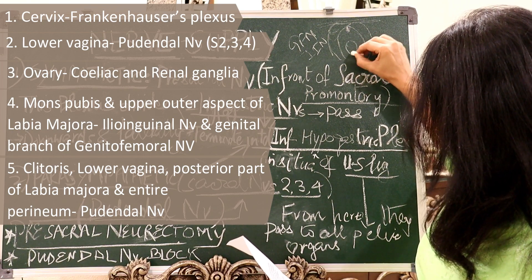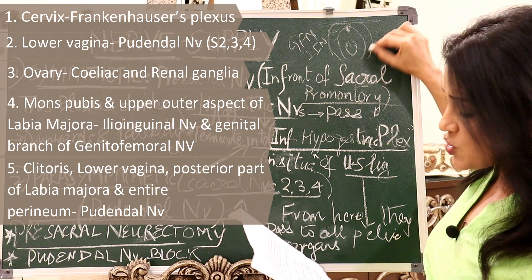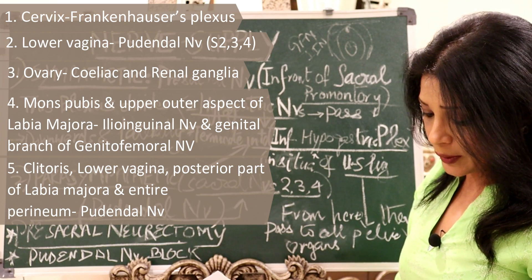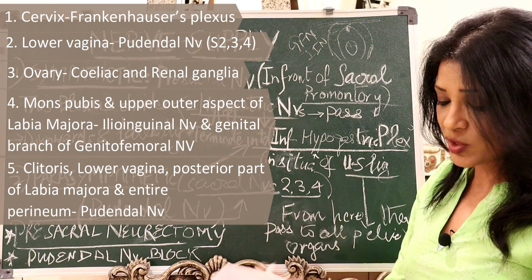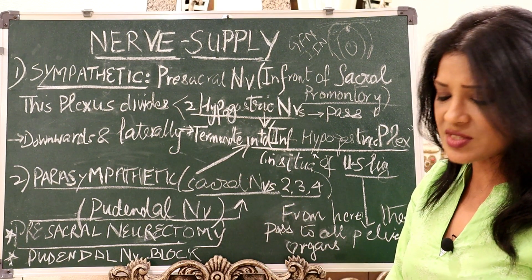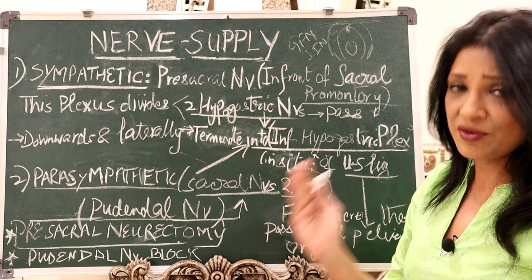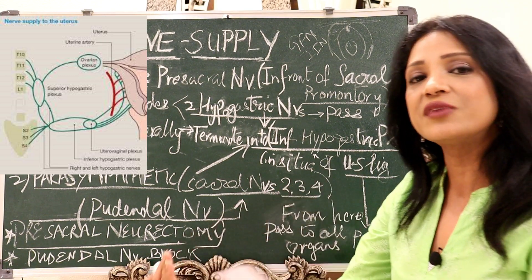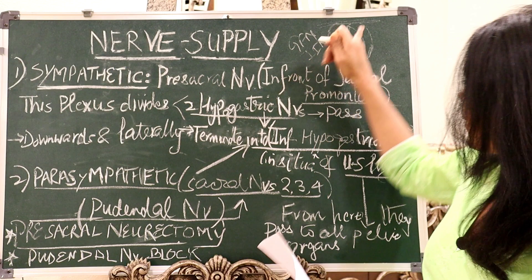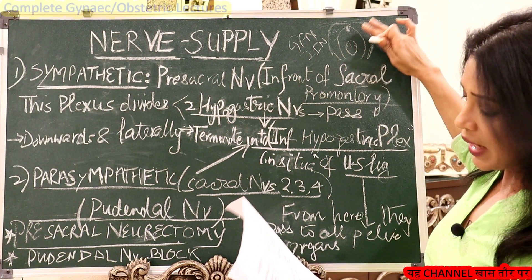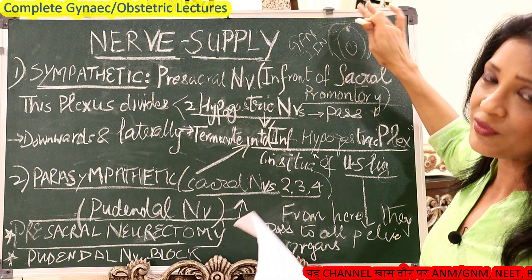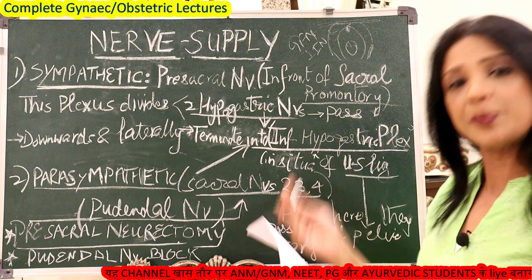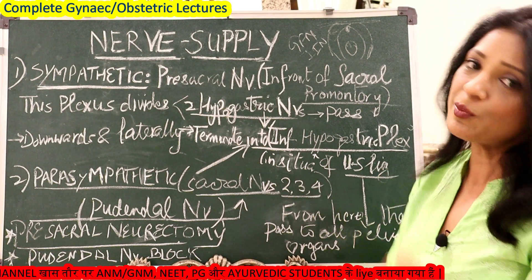The clitoris, the lower vagina, the posterior part of the labia majora, and the entire perineum are supplied by the pudendal nerve. The upper and outer aspect of the labia majora is supplied by the genitofemoral nerve — L1 and L2. The posterior part of the labia majora, along with the perineum, lower vagina, and clitoris, is supplied by the pudendal nerve, which is S2, S3, and S4 parasympathetic fibers.